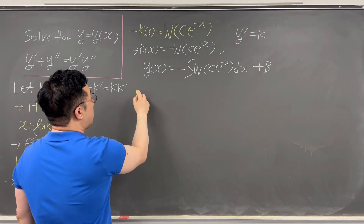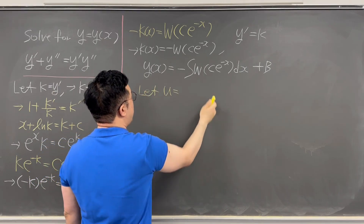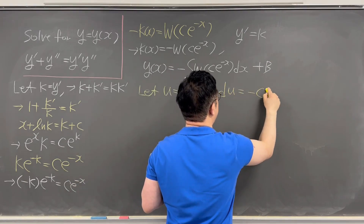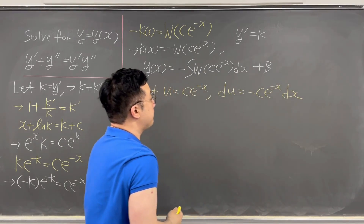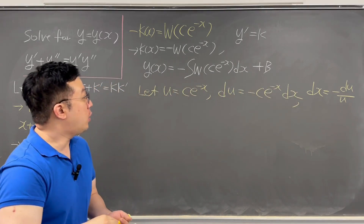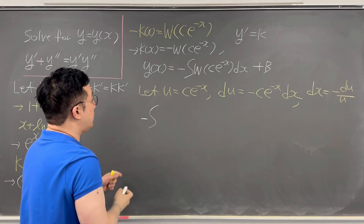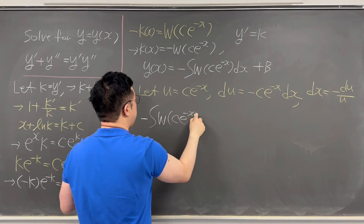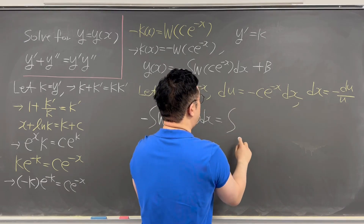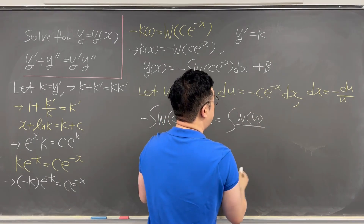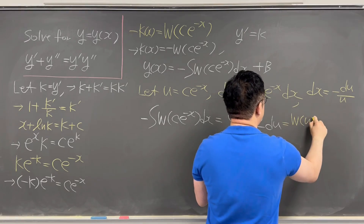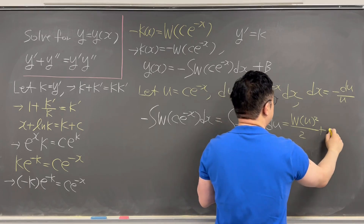We make another substitution: let u = c · e^(−x). Then du = −c · e^(−x) dx, so dx = −du/u. The integral becomes ∫W(u)/u du, which evaluates to W(u)²/2 + W(u).